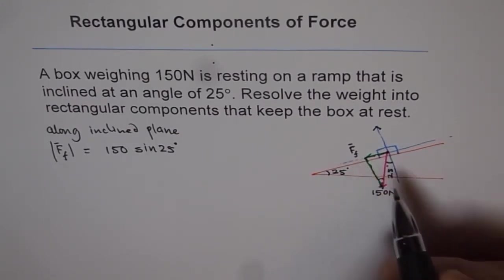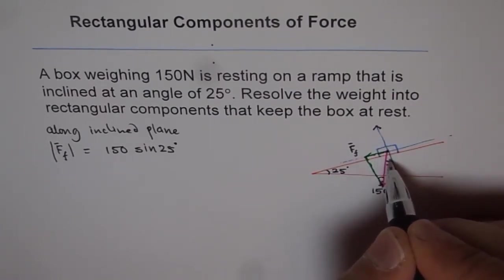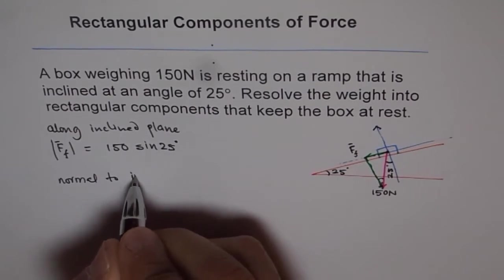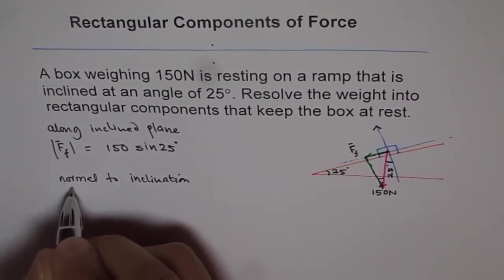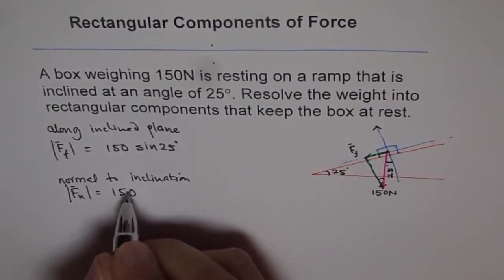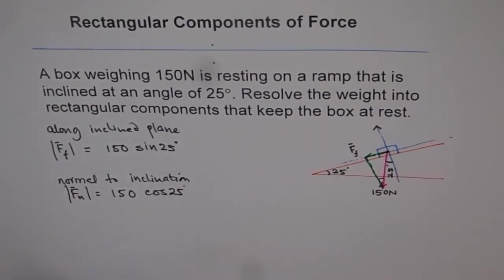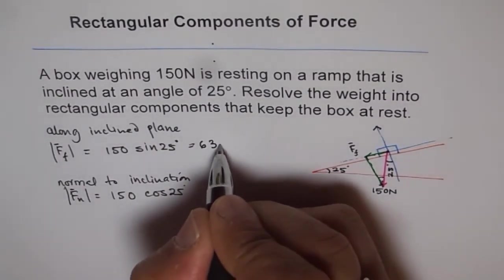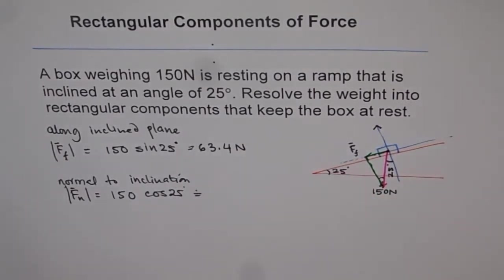The component normal to the inclination — which we call fn — will be the cosine component: 150 cos of 25 degrees. Using a calculator: 150 sine of 25 gives us 63.4 newtons, and 150 cos of 25 gives us approximately 136 newtons.